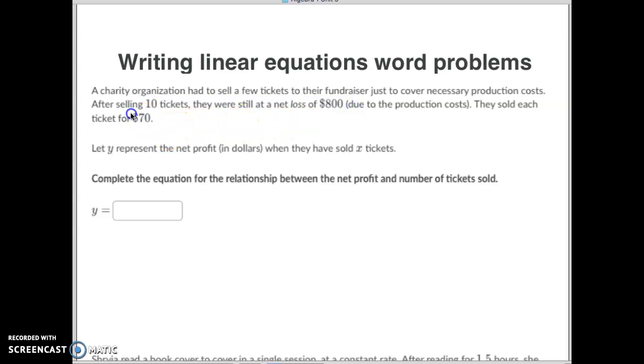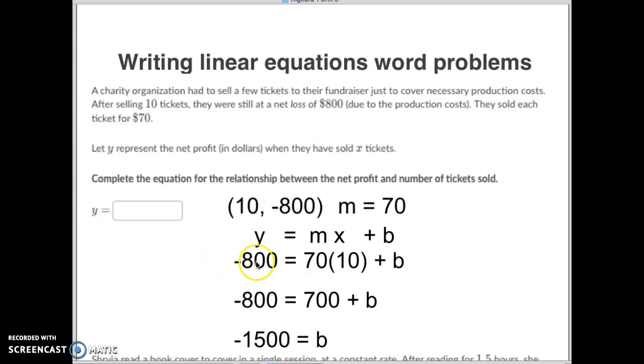They've also given you the slope telling you that they sold each ticket for $70. So if we write down that information, we know that after 10 tickets, they were at a net loss of $800 and that they sold each ticket for $70 is our slope. Now, it's just a matter of plugging into our y equals mx plus b. We know that the y is negative 800. We know the m is 70. We know that the x is 10 and we just got to solve.